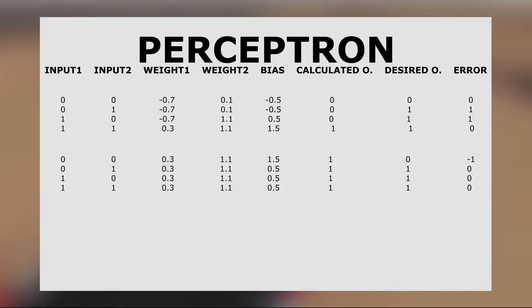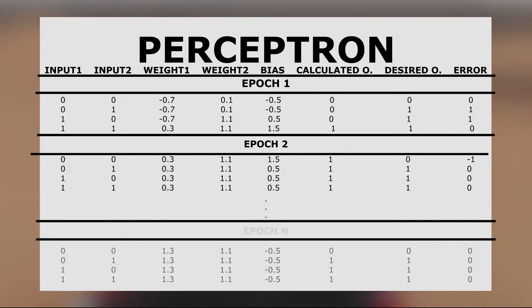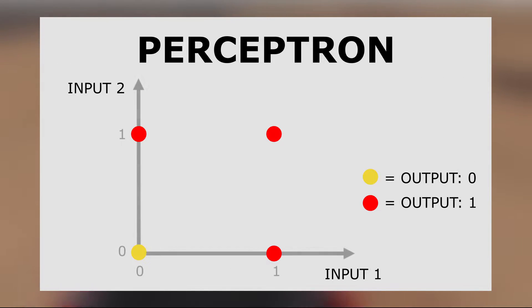Going once through all the training sets constitutes one iteration. As we can see, after a few iterations our Perceptron adjusted its weight and bias in a way that always gives us a correct result for a particular training set.